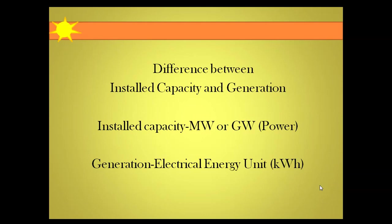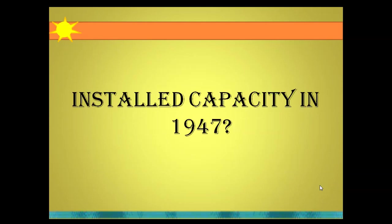Now the question is: what was the installed capacity in 1947 when India got independence? It's interesting to see that when India got independence, the installed capacity was just 1362 megawatt — we can say it was just about one gigawatt.